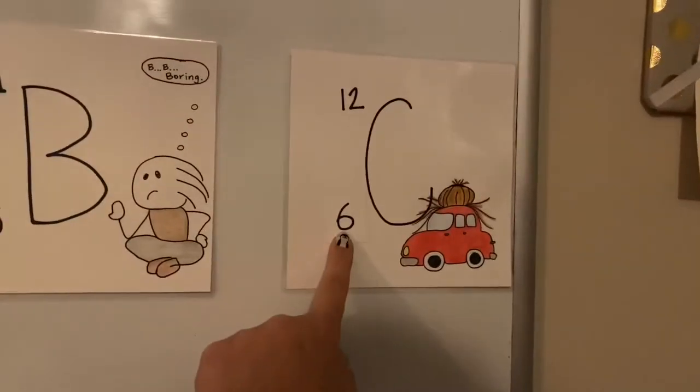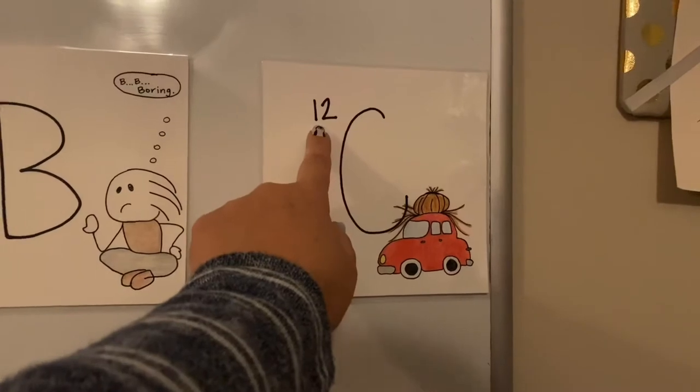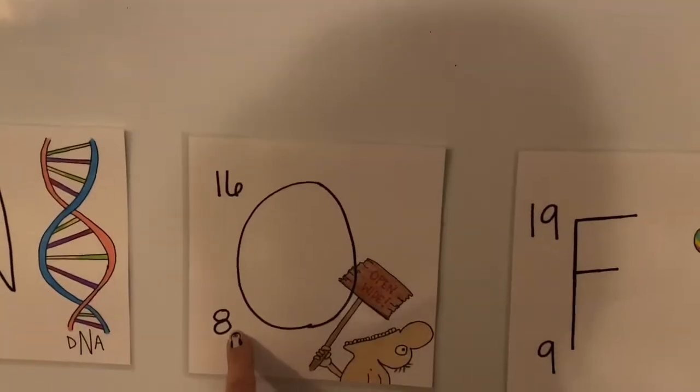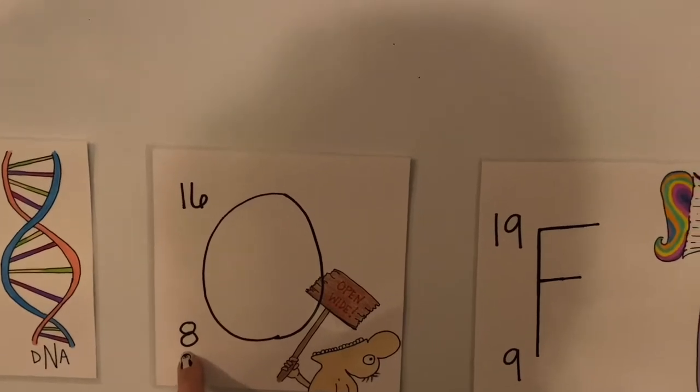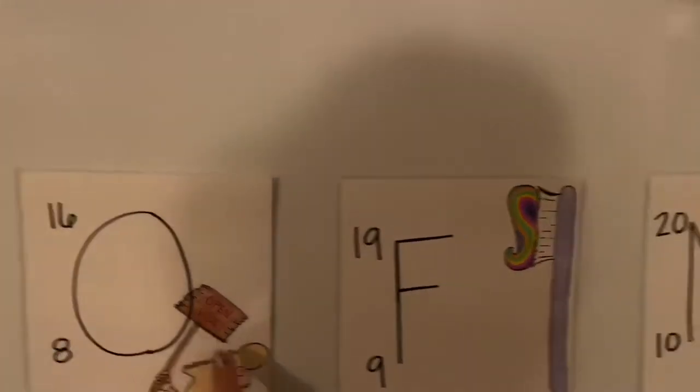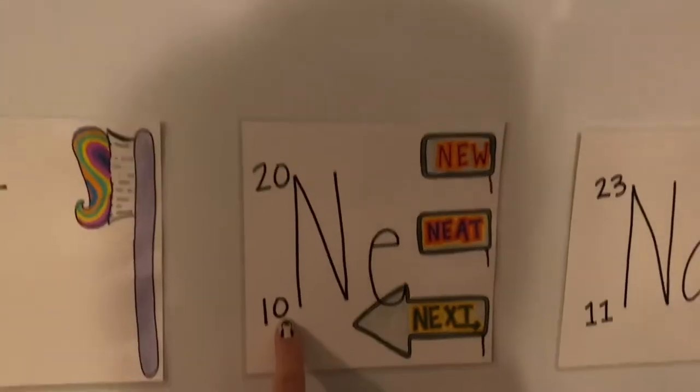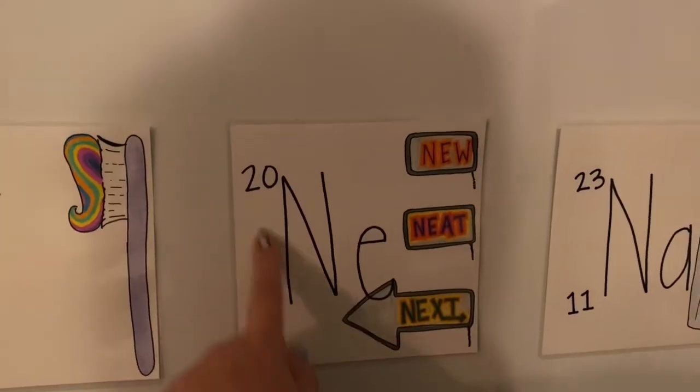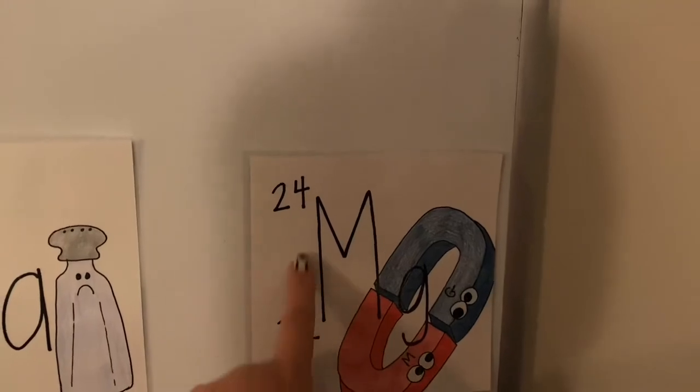That's an exception. 6 is an even number. Multiply it by 2. 12 is our atomic mass. Oxygen. We have 8. Multiplied by 2 is 16. We have 10. This is neon. 10 multiplied by 2 is 20. Magnesium. 12 multiplied by 2 is 24.